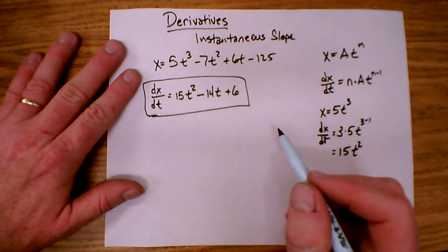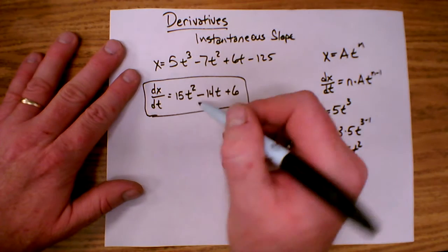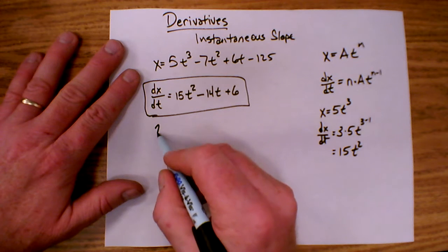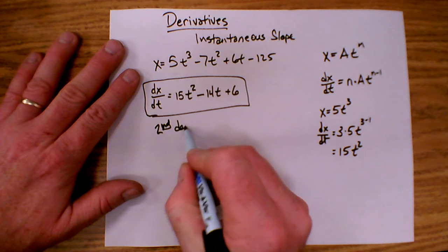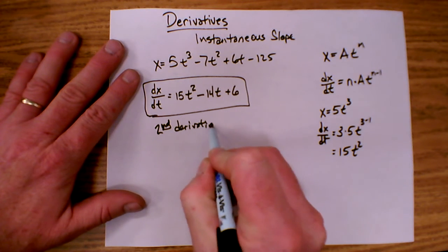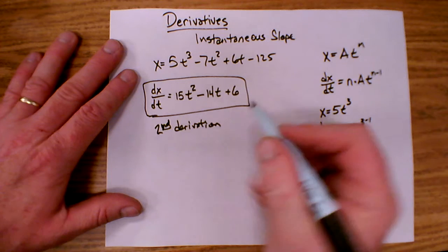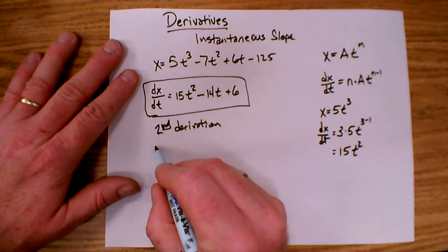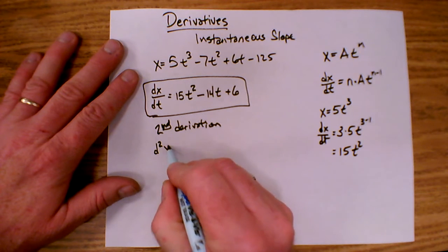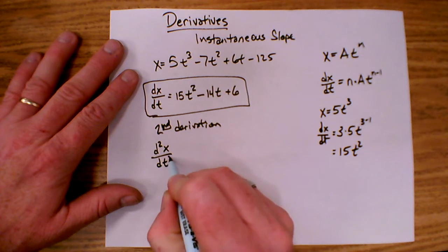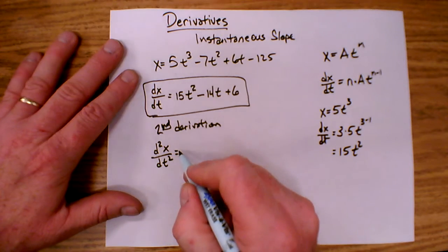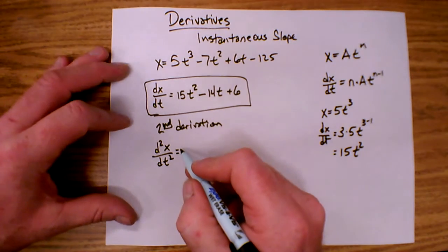Now, I can take the derivative of this function again. That would be called the second derivative. And the notation for a second derivative is d squared x over dt squared. And that just means I take the derivative of the derivative of x with respect to time.